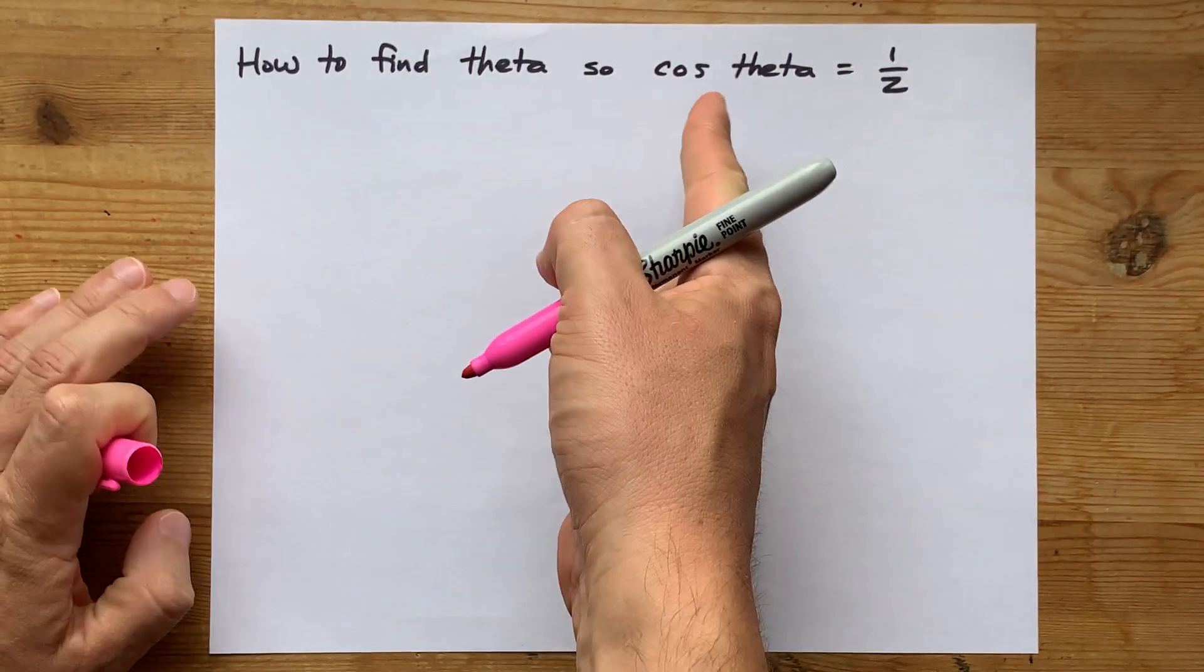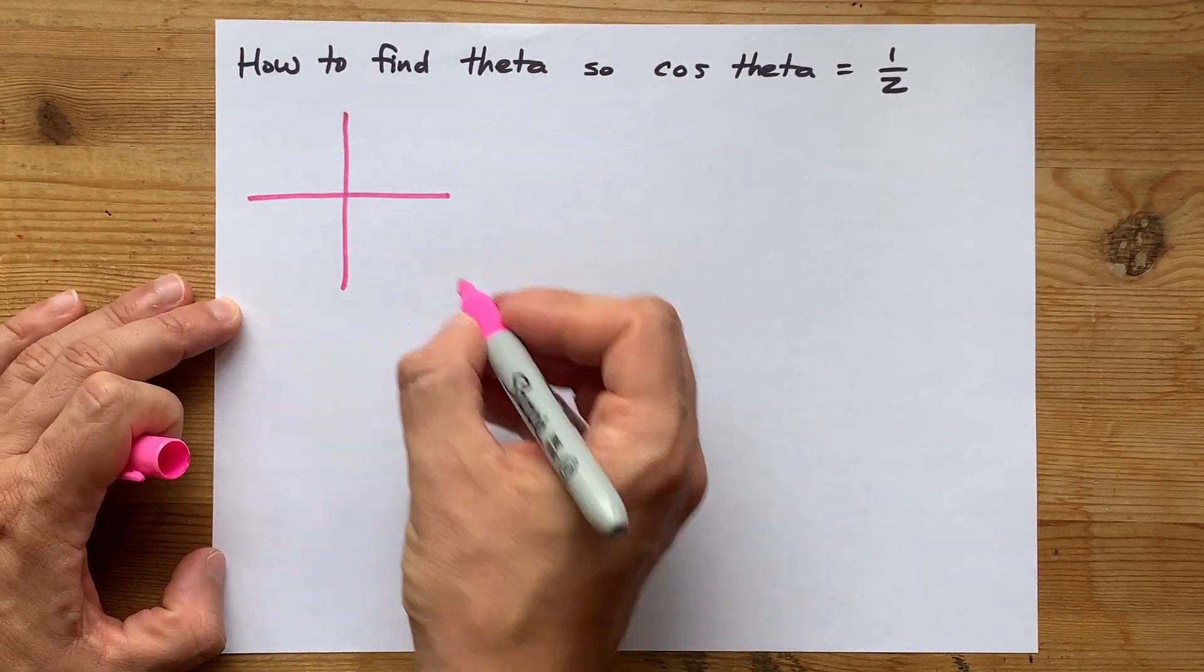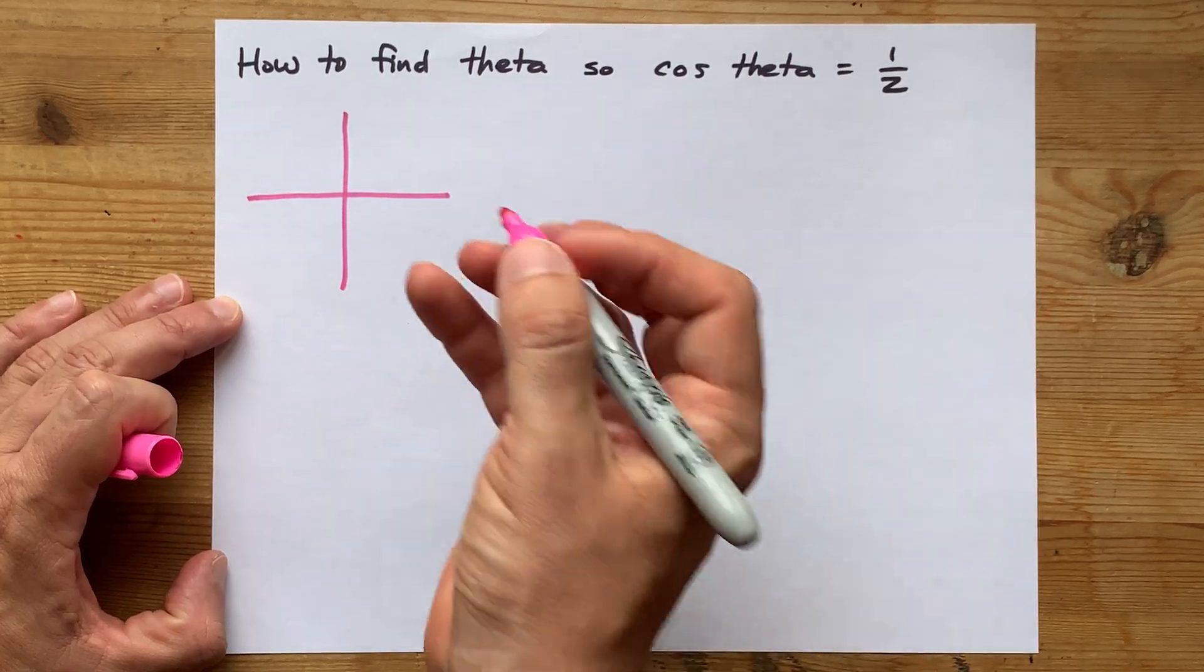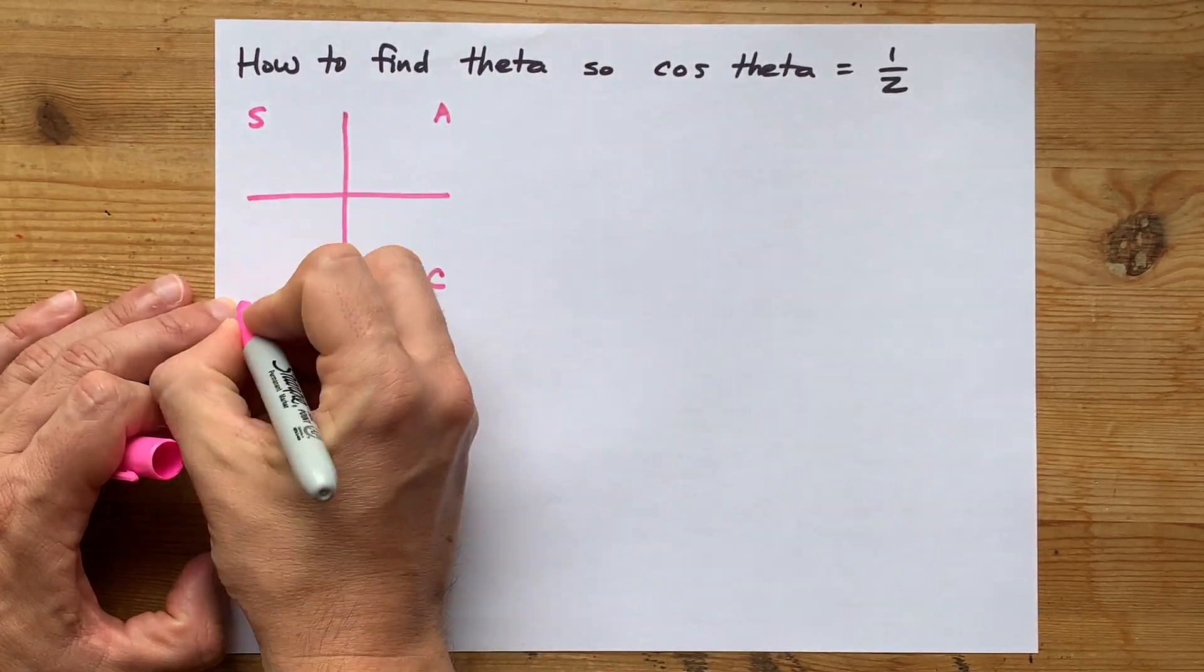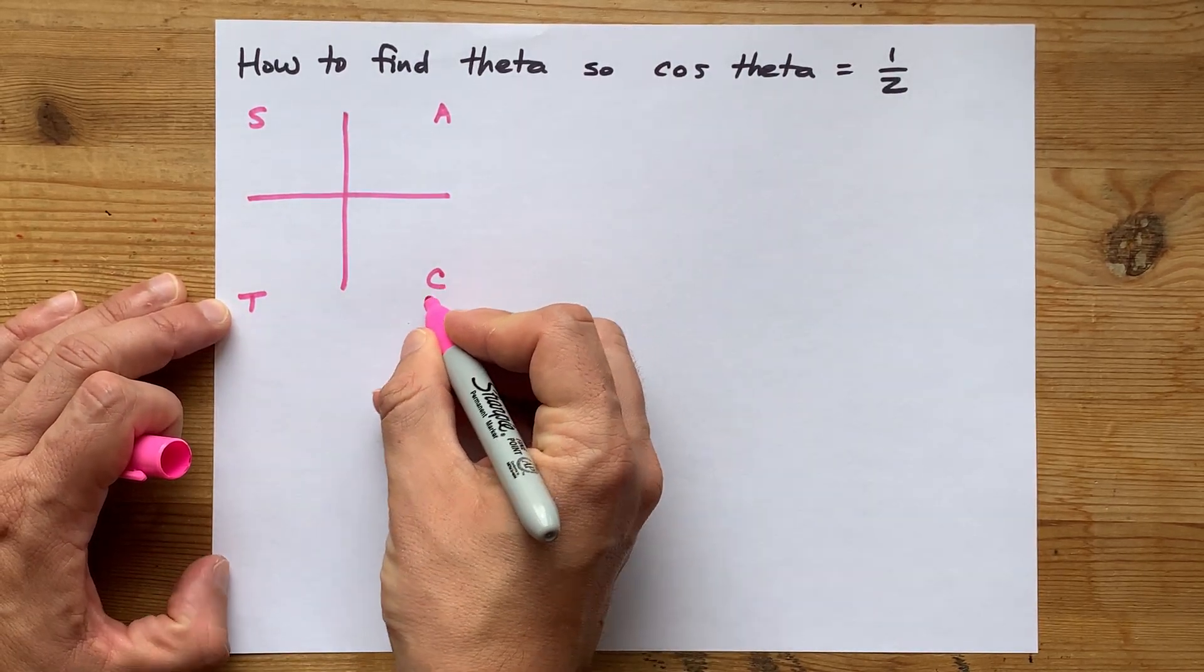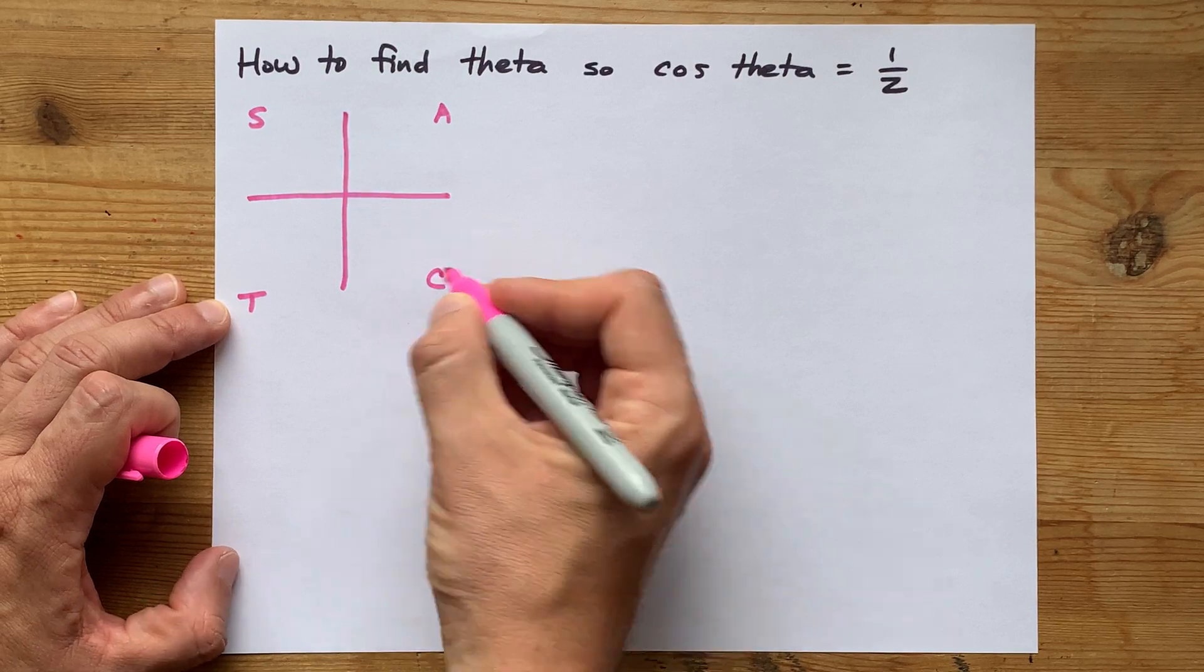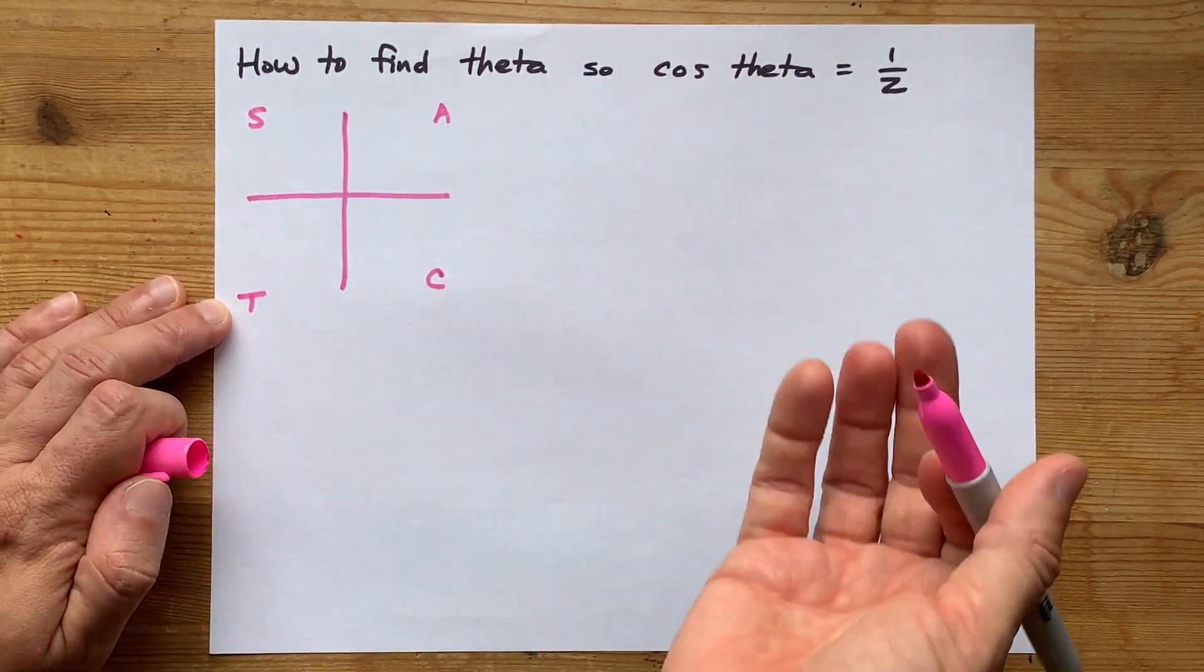The way that I solve problems like this is to draw the four quadrants, and then remind myself of something called the CAST rule, C-A-S-T, from the bottom right-hand quadrant around, which tells you which ratios are positive in which quadrants.